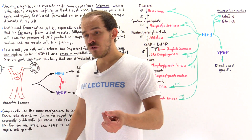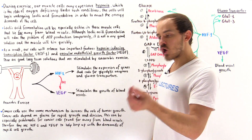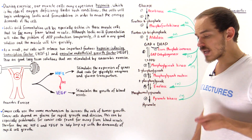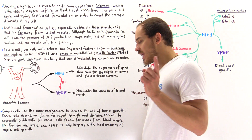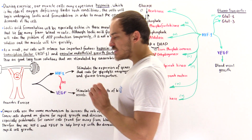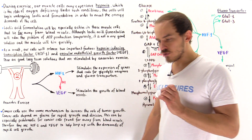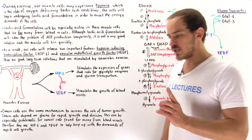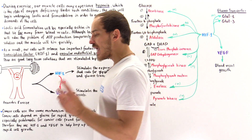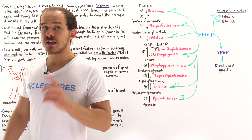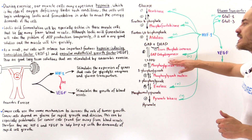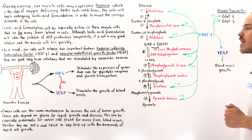Pyruvate, under aerobic conditions, will go into the mitochondria, and the citric acid cycle will take place. That will not only generate many more ATP molecules, but perhaps even more importantly, it will regenerate those NAD+ coenzymes that are essentially used up in step 6 of glycolysis.